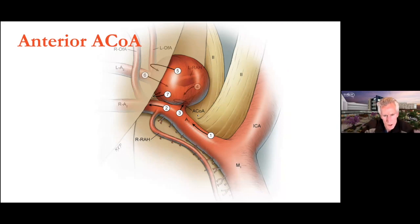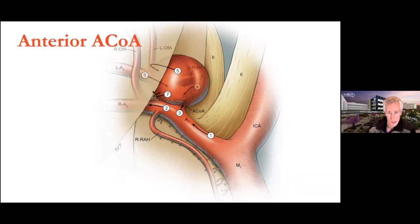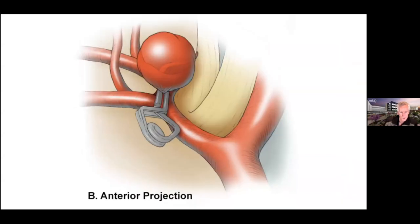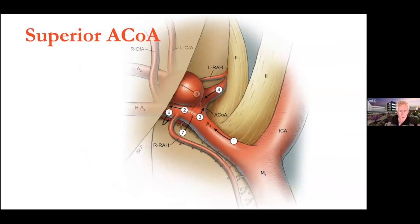For the anteriorly projecting aneurysm, some early steps are the same, but you can usually slip under, cross the chiasm, and get proximal control of the contralateral A1. Then you go over the top, work down to the neck, and lastly dissect the perforators — which for anterior projectors are on the opposite side of the complex and are usually easy to see and preserve. The clip is typically a straight standard clip across the neck parallel to the ACoM.